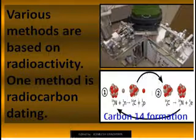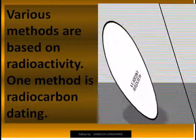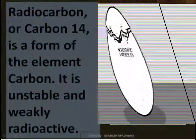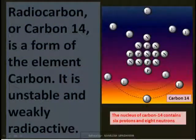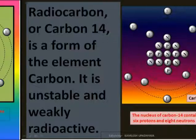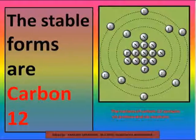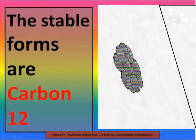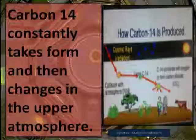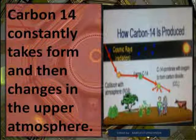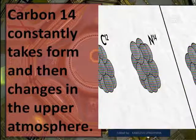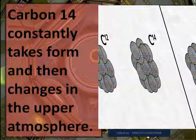Various methods are based on radioactivity. One method is radiocarbon dating. Radiocarbon or carbon-14 is a form of the element carbon. It is unstable and weakly radioactive. The stable forms are carbon-12 and carbon-13. Carbon-14 constantly takes form and then changes in the upper atmosphere.